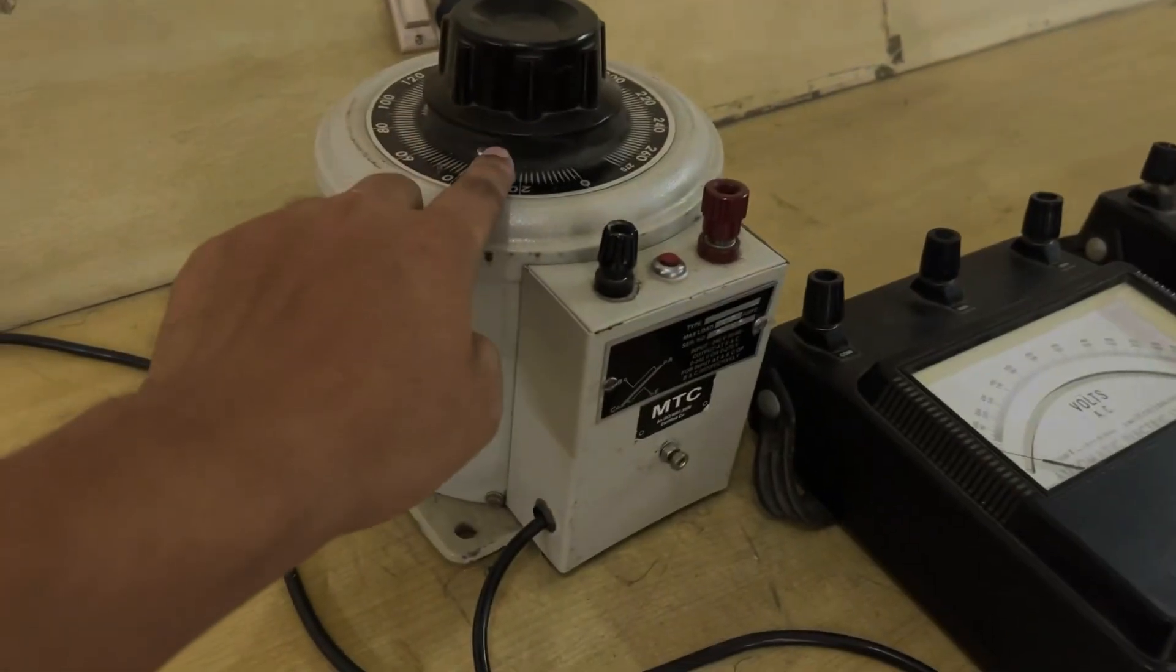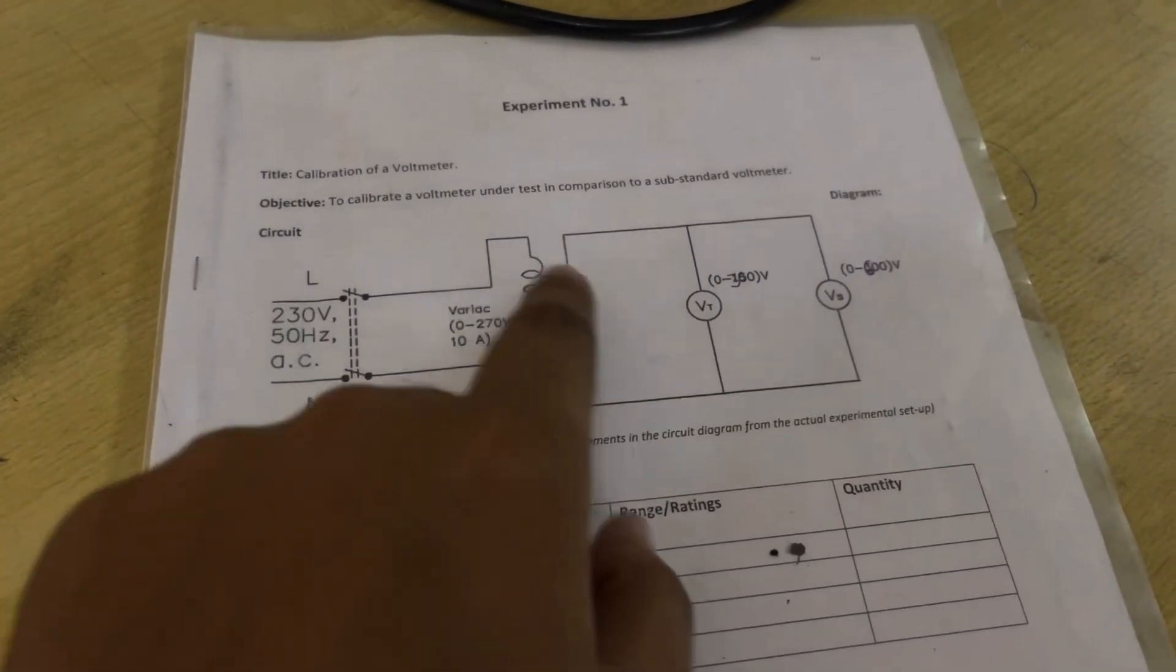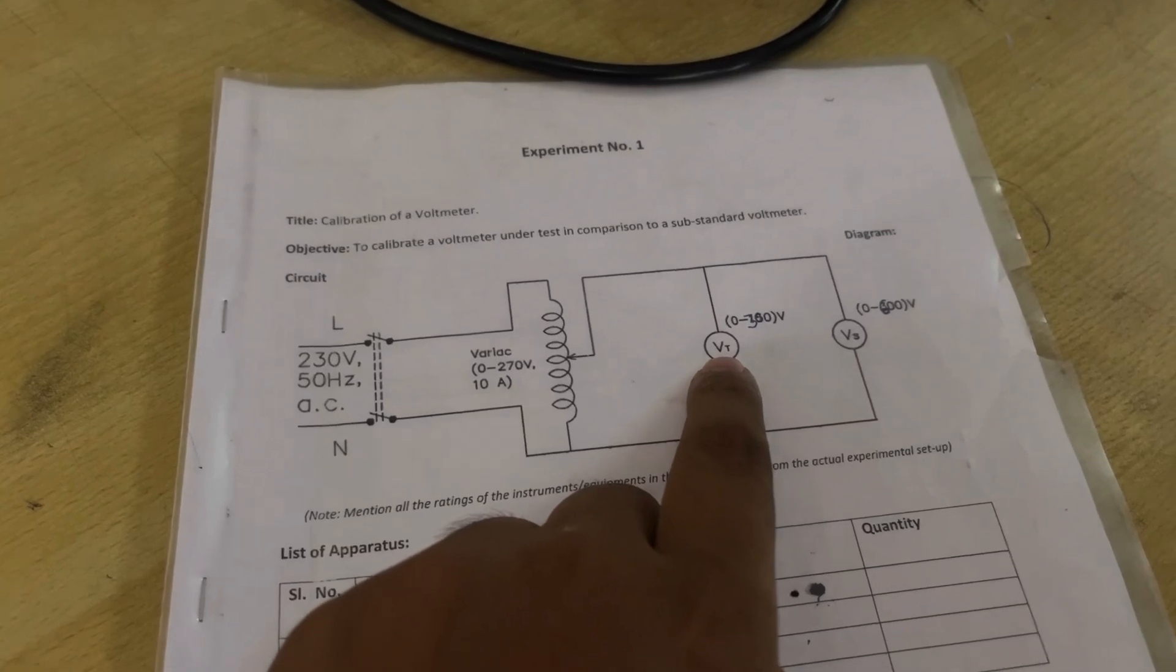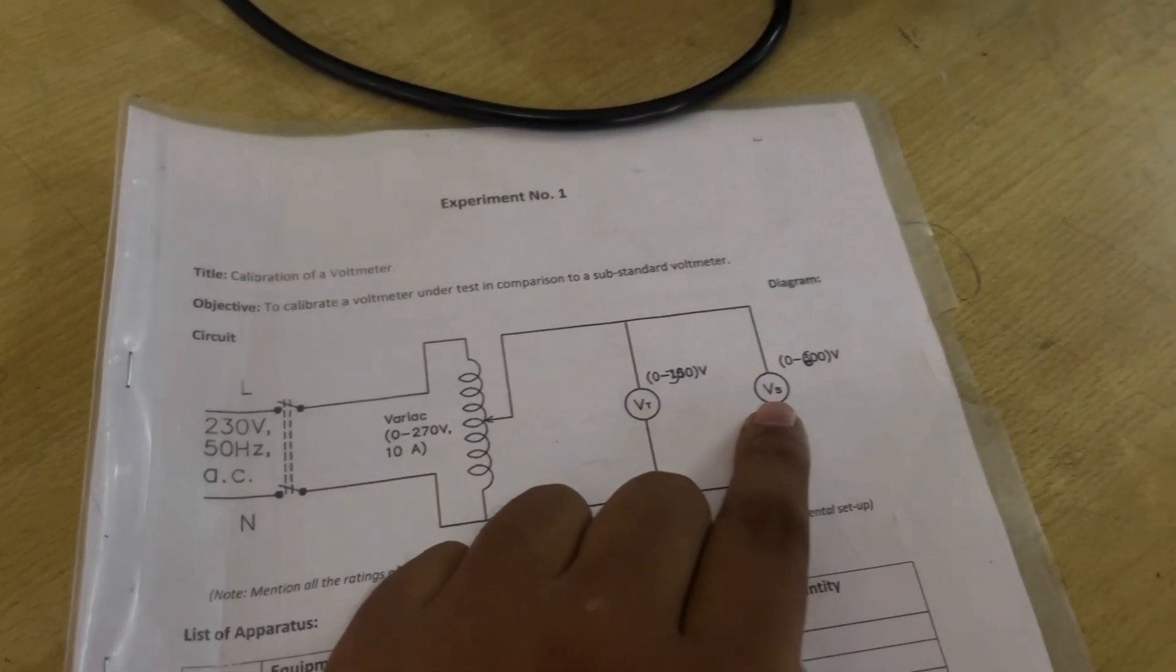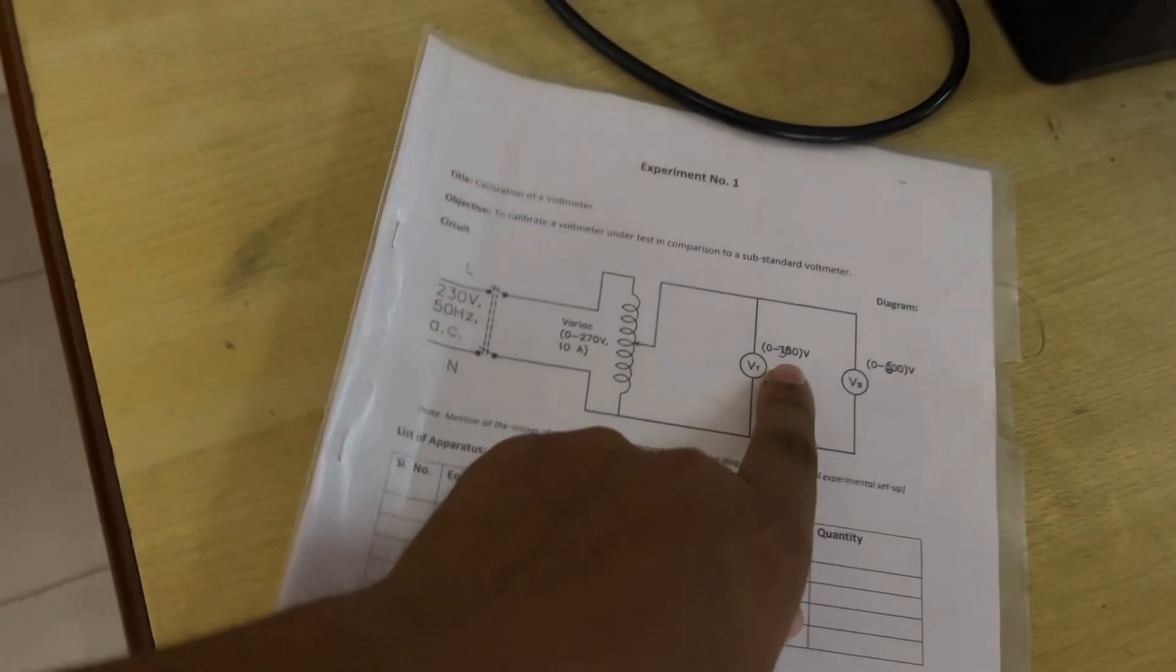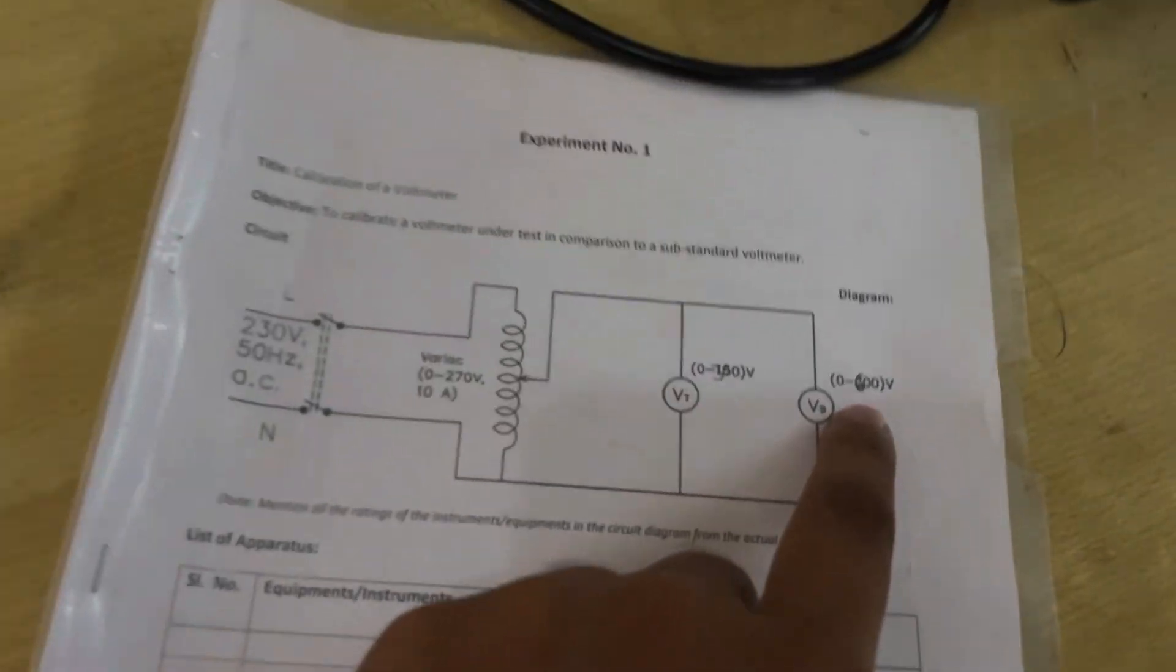This is the variate, then this is voltmeter one and this is the second voltmeter. The rating of one is zero to 300 and another one is zero to 600.